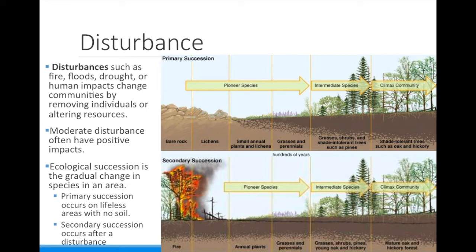Ecological succession is the gradual change in the species in an area. There are two types of succession: primary and secondary. Secondary succession is what occurs after a disturbance, like a fire.